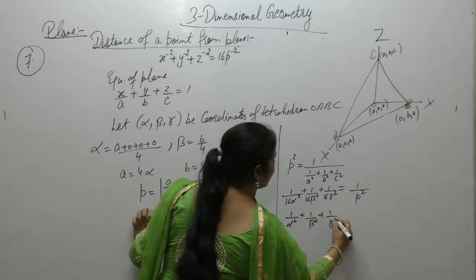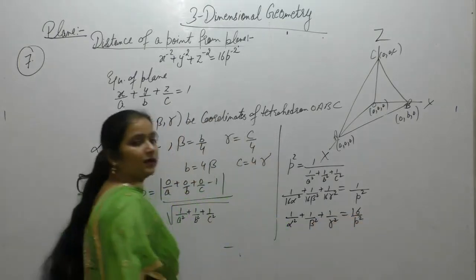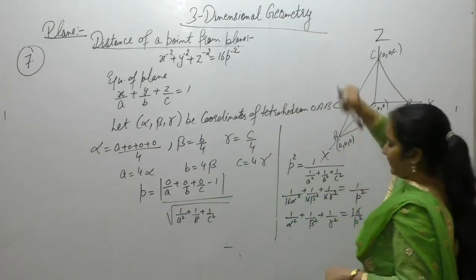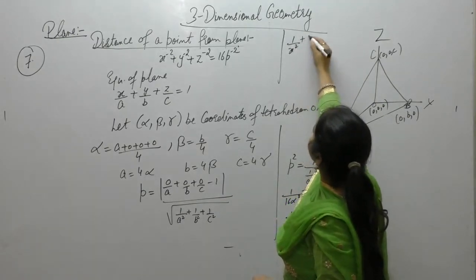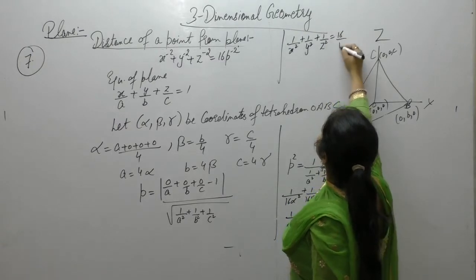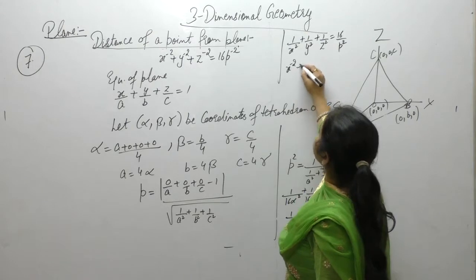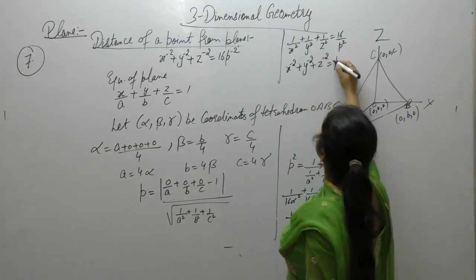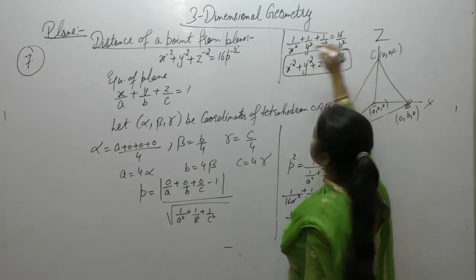1 upon beta square, 1 upon gamma square is equal to 16 upon p square. Now, instead of alpha, beta, gamma, we will write x, y, z. So 1 upon x square, 1 upon y square, 1 upon z square is equal to 16 upon p square. Or, we can write it as x minus 2, y minus 2, z minus 2 is equal to 16p minus 2.